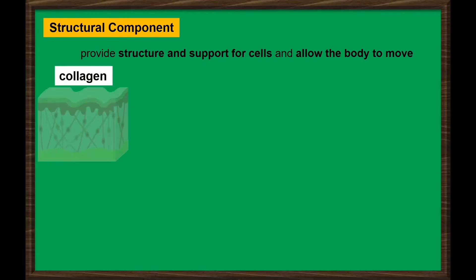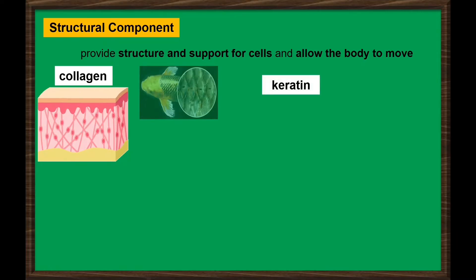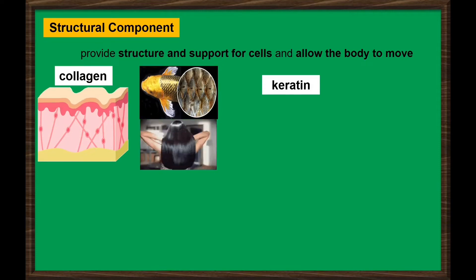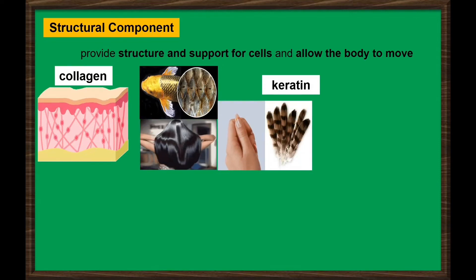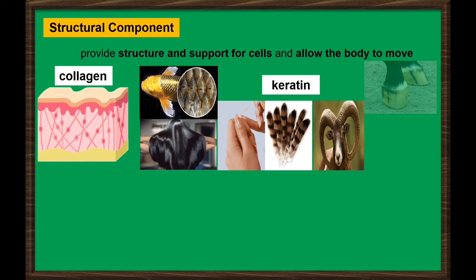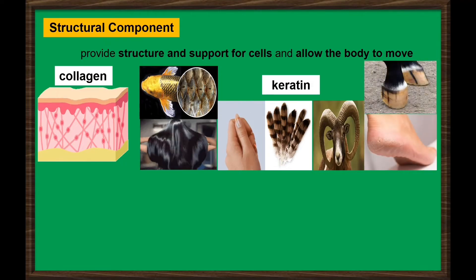Collagen is the most abundant protein in mammals and gives the skin strength and elasticity. Next is keratin, which is the main protein material making up scales, hair, nails, feathers, horns, hooves, calluses, and the outer layer of skin among vertebrates.